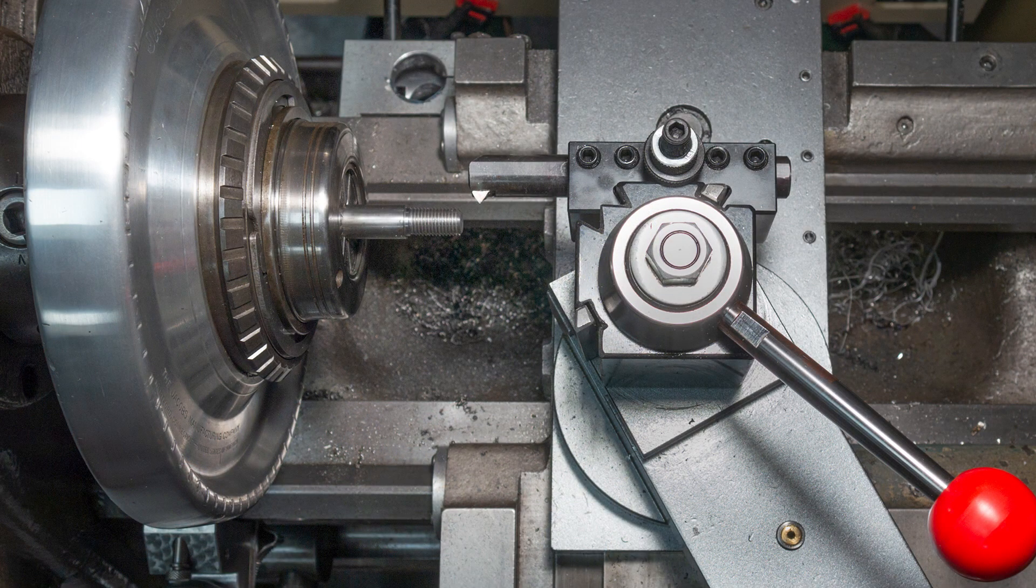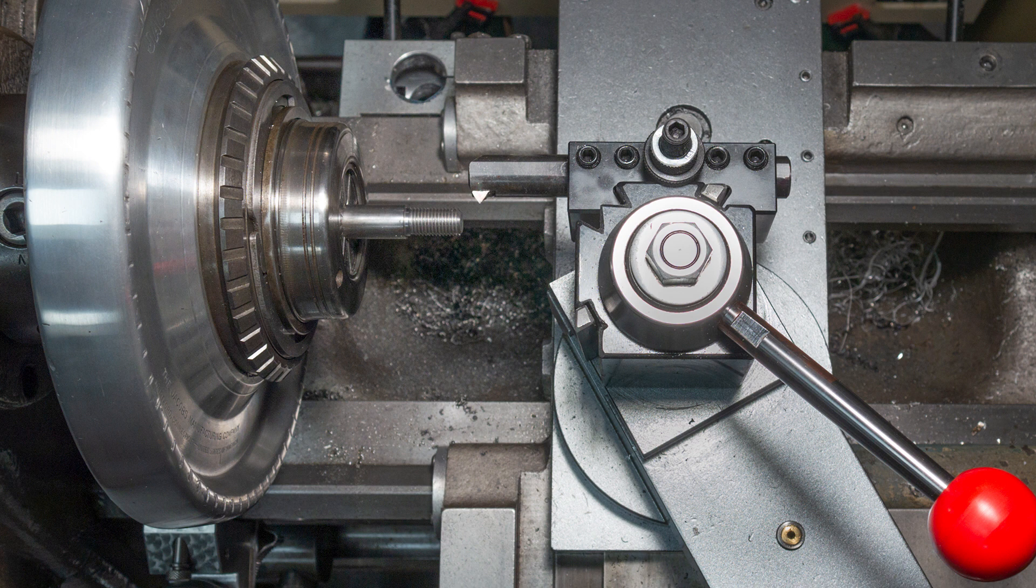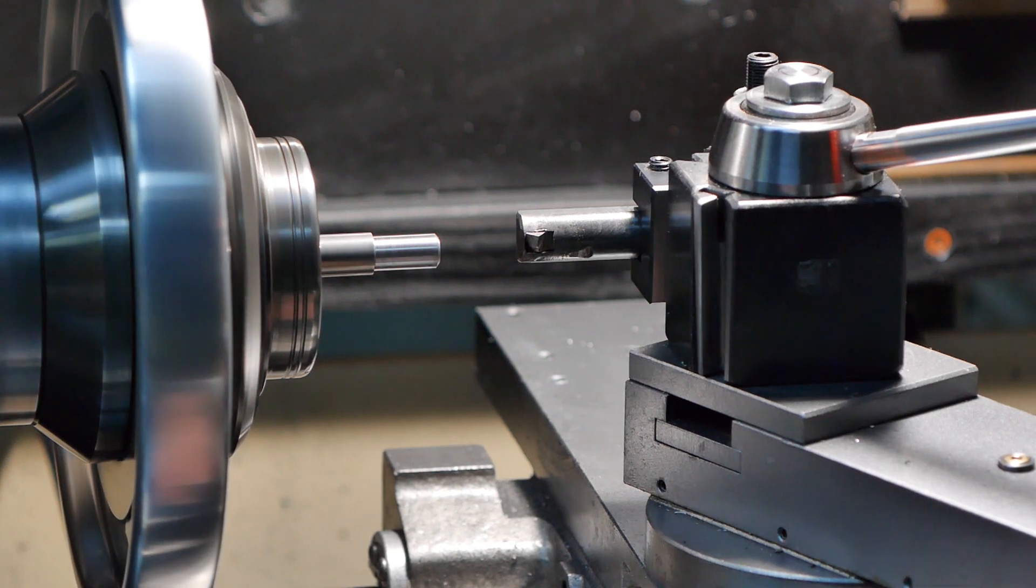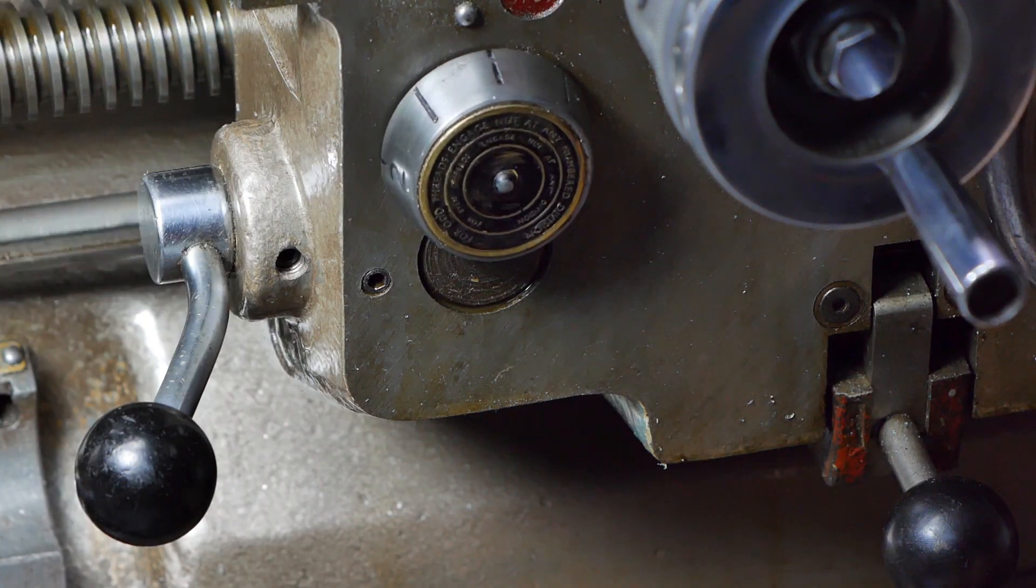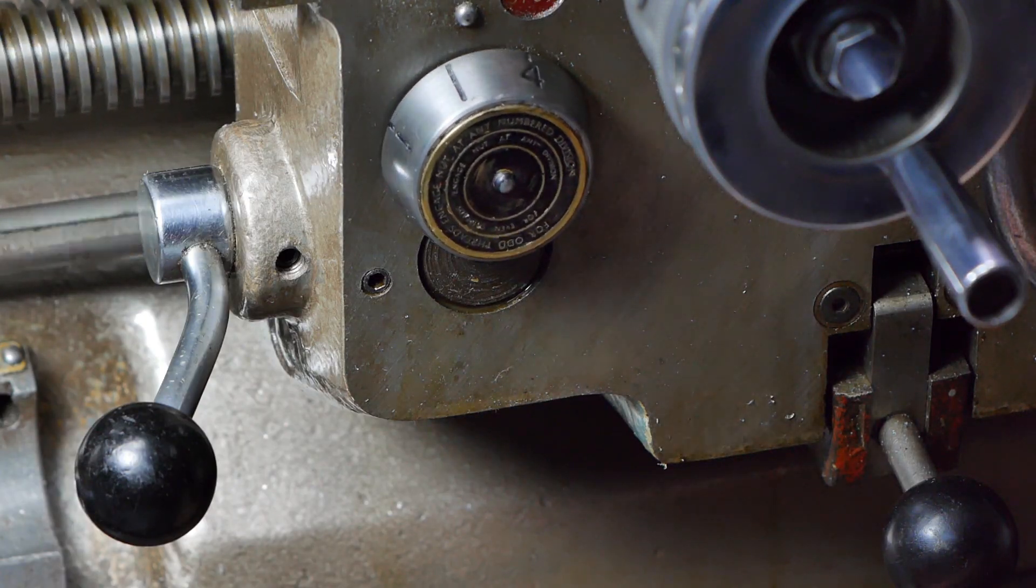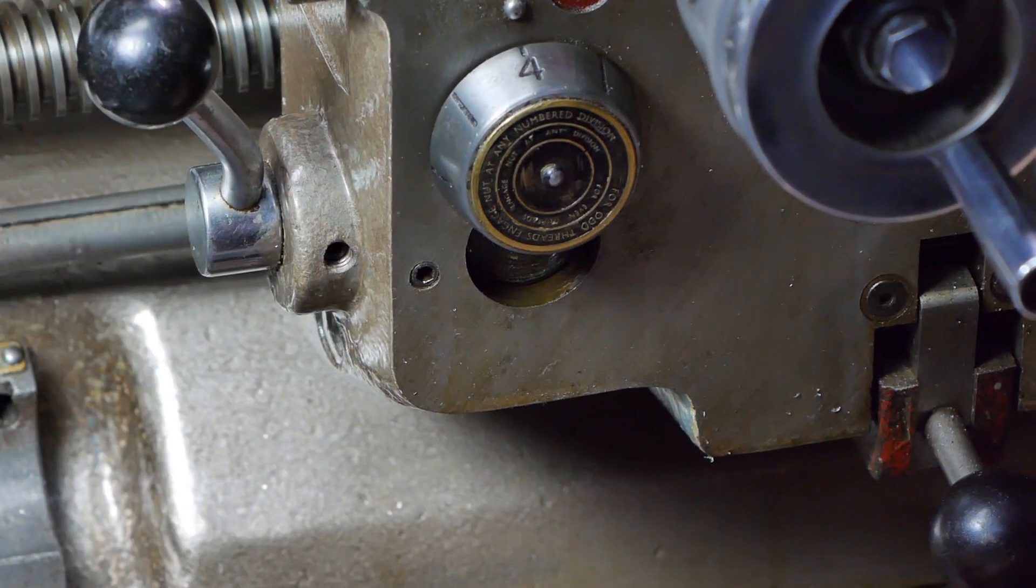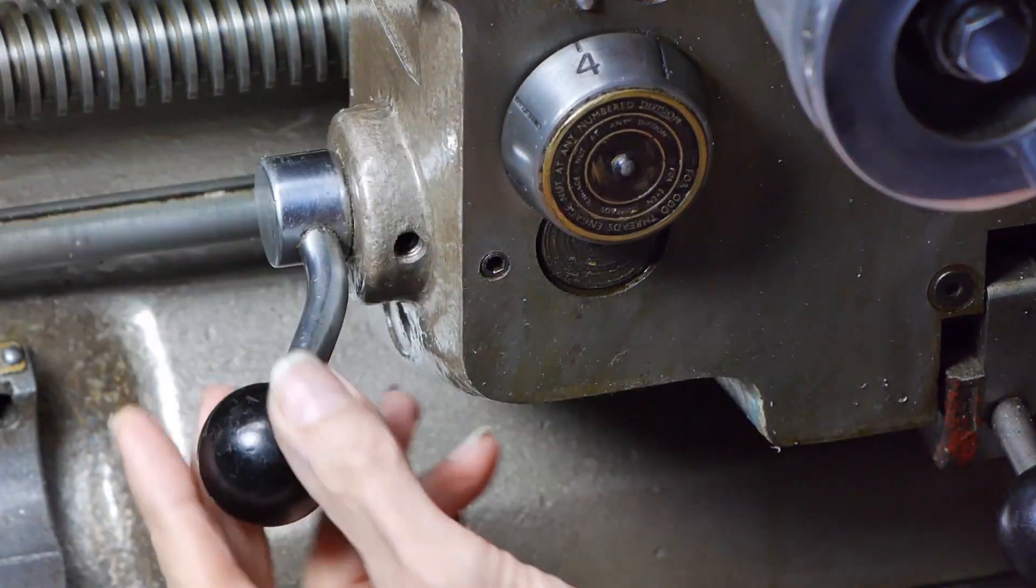So now just use your favorite method for cutting and measuring the thread, but first move the carriage away from the work, turn the spindle on in reverse, engage the half nuts, and be sure the carriage moves away from the headstock. If it does not, reverse the rotation direction of your lead screw and check again.